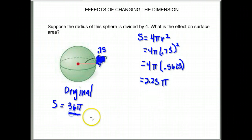So originally I had a surface area of 36π. Now I have a surface area of 2.25π. What changed? Well, if we take 36π divided by 2.25π, we get 16.